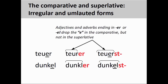Finally, there are some important exceptions to the manner in which we form the comparative and superlative forms of adjectives and adverbs. The adjective 'teuer,' meaning 'expensive' in German, ends with '-er' in the positive form. When we construct a comparative form, therefore, we need to drop the 'e' from this ending. The same holds true for adjectives ending in '-el,' such as 'dunkel,' meaning 'dark.' You can see examples of both adjectives on the screen and how the 'e' is dropped from the '-er' and '-el' endings in the comparative. Note, however, that the 'e' is added back in the superlative form.